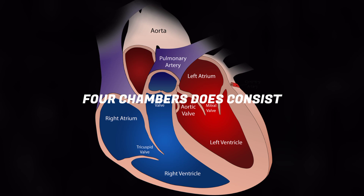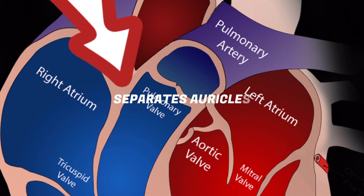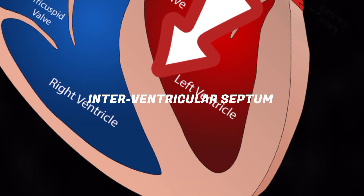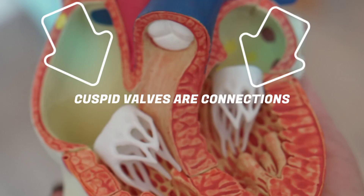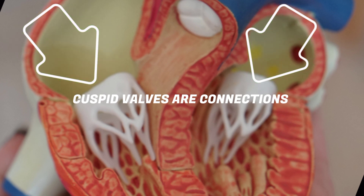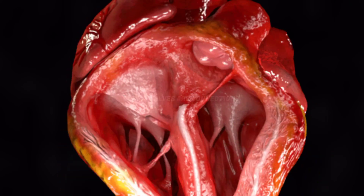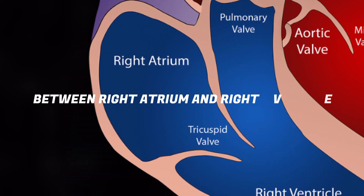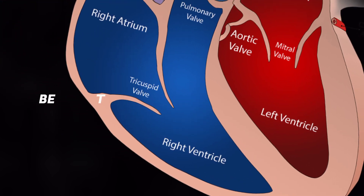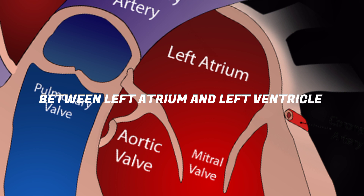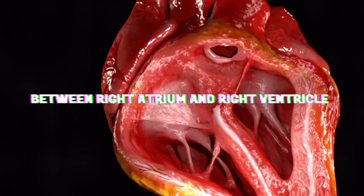Four chambers consist: two atria, two ventricles. The inter-auricular septum separates the auricles; the inter-ventricular septum separates the ventricles. Between chambers of the same side, cusper valves are the connections. Between the right atrium and right ventricle, that is the tricuspid valve. Between the left atrium and left ventricle, that is the bicuspid valve.